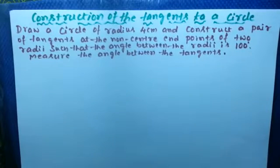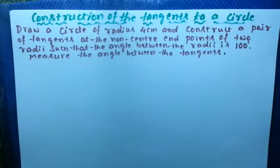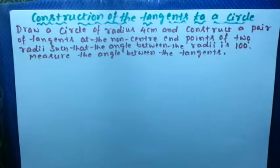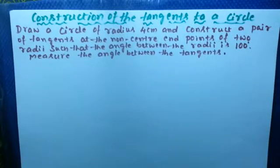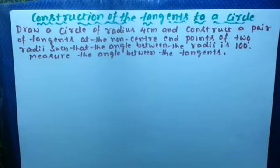Construction of the tangent to a circle. A tangent means a straight line that touches the circle at one and only one point — this is called a tangent. Now, how to construct the tangent at the end of a radius.